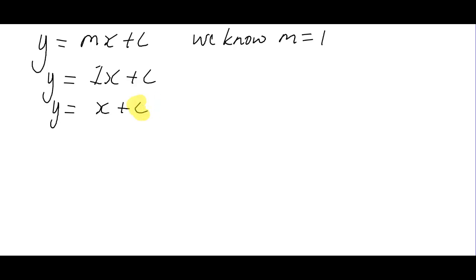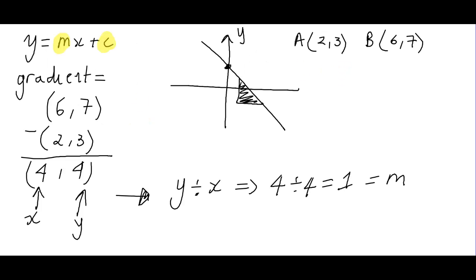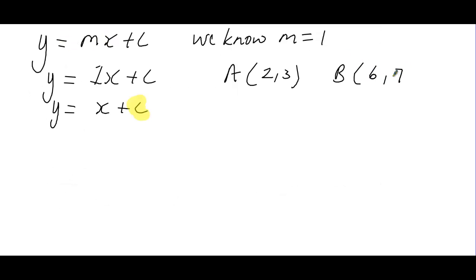And what we can do in order to find it is either use the coordinates A which was 2,3, or the coordinate B which was 6,7, and substitute them into our equation. Now I'm going to try to look for the easiest one and in our case it's 2,3. And we know that 2 is the x coordinate and 3 is the y coordinate. So I'm going to go ahead and replace the y here with the 3 and the x here with the 2.